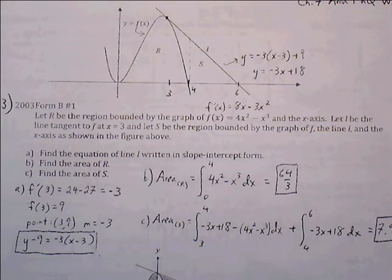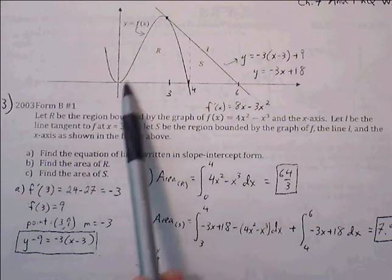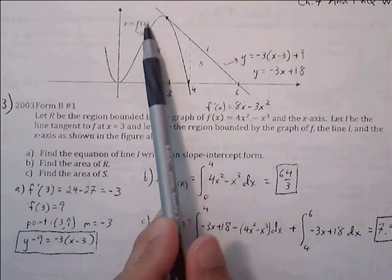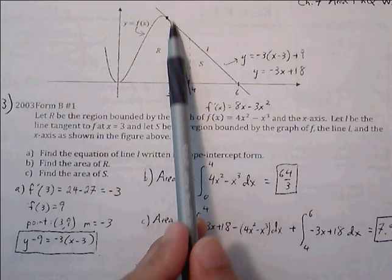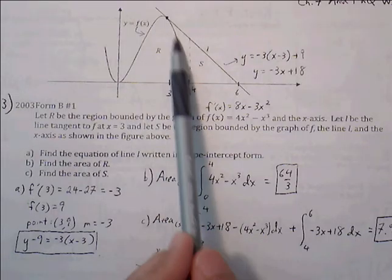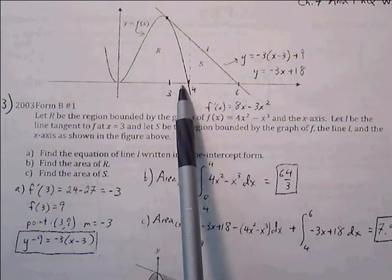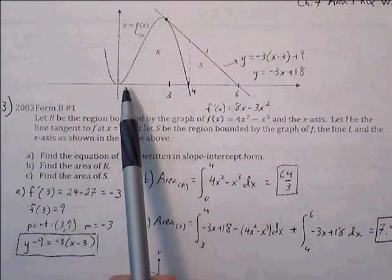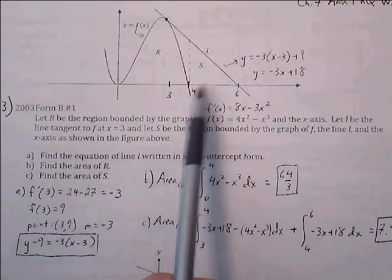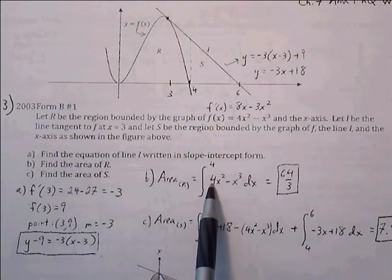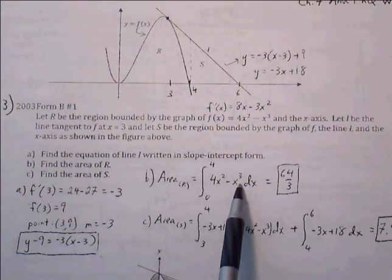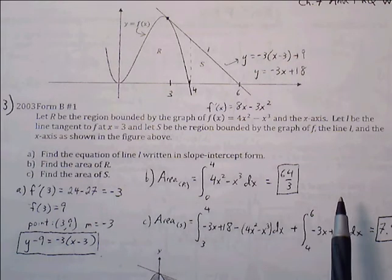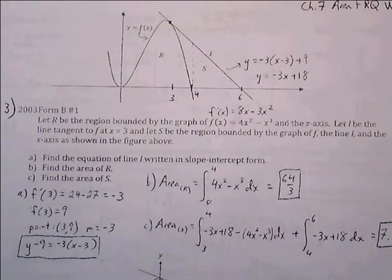Part B: find the area of R. To find the area of R, it's simply top minus bottom. The curve f of x stays as the top, and the bottom is just 0. We integrate from 0 to 4: the integral of (4x squared minus x cubed) minus 0. Working through the power rule or using a calculator, we get 64 over 3.